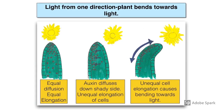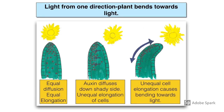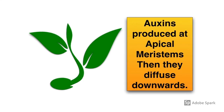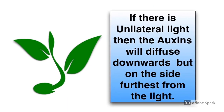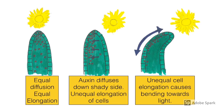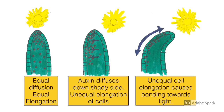Phototropism — how a plant changes its growth in response to light — is controlled by the auxin indole acetic acid (IAA). When light comes from one particular direction, a plant will bend to grow in that direction. This is because auxins produced in the apical meristems diffuse downwards. If there is unilateral light — light coming in from one particular side — the auxins diffuse more down the shady side, the side furthest away from the light. The IAA produced at the tip diffuses more down the shady part of the stem, causing those cells to elongate more and resulting in the plant bending towards the light.